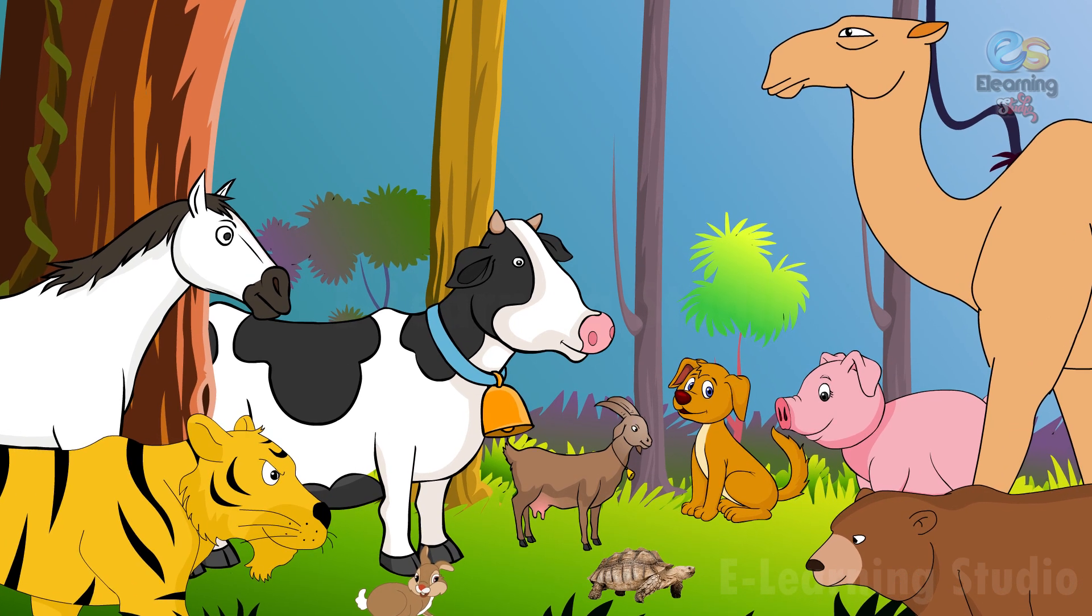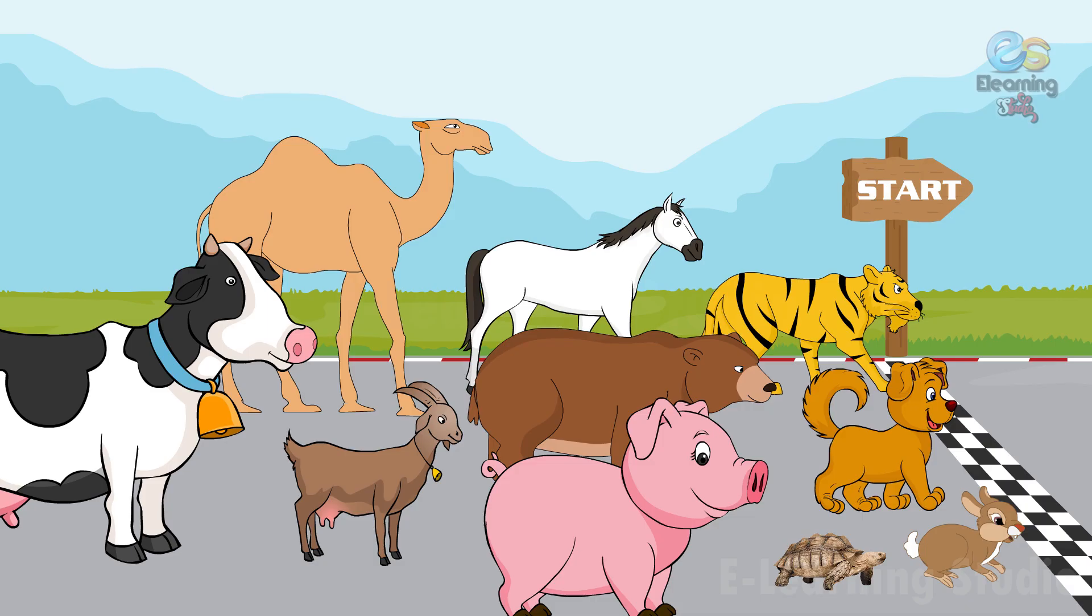Do you know how many animals are here? Let's count. 1, 2, 3, 4, 5, 6, 7, 8, 9, 10. Yes, here are 10 animals running in the race and they all are standing on the start position. The race begins.